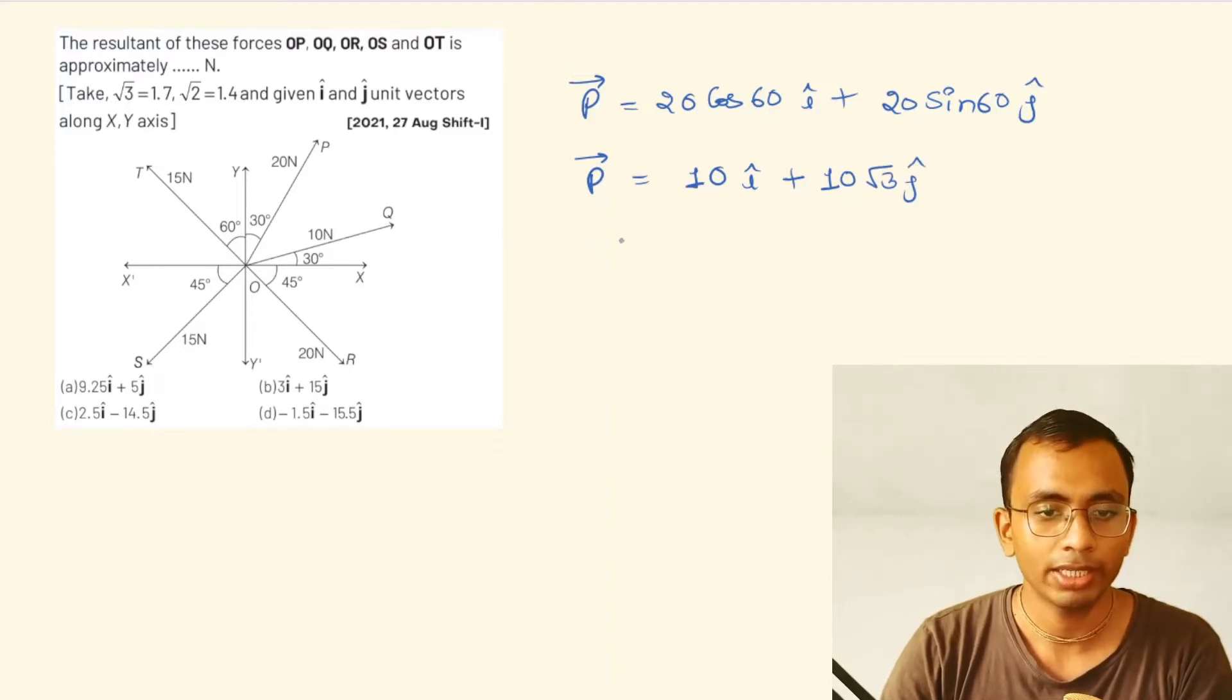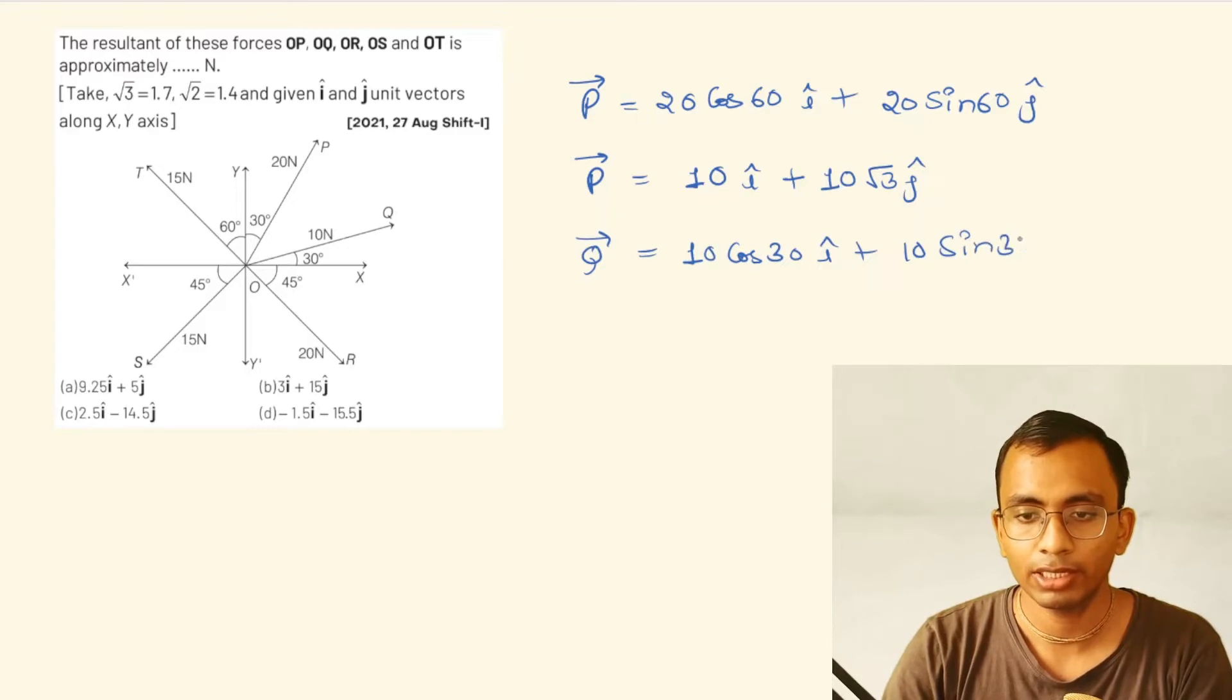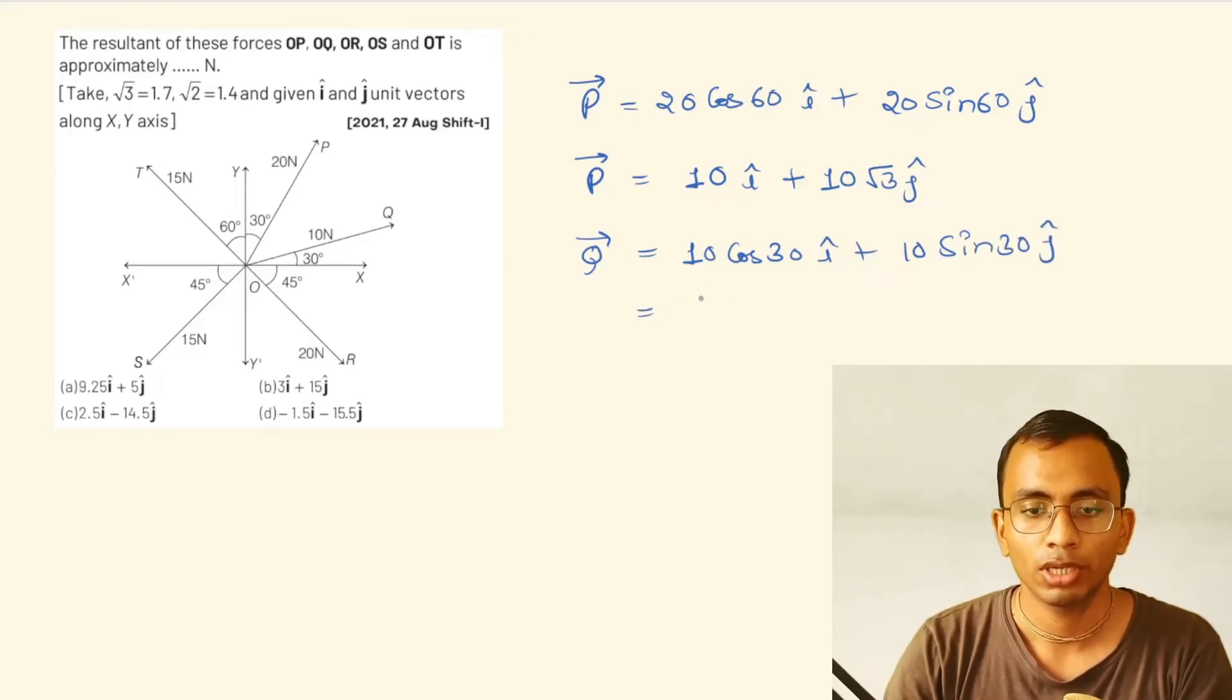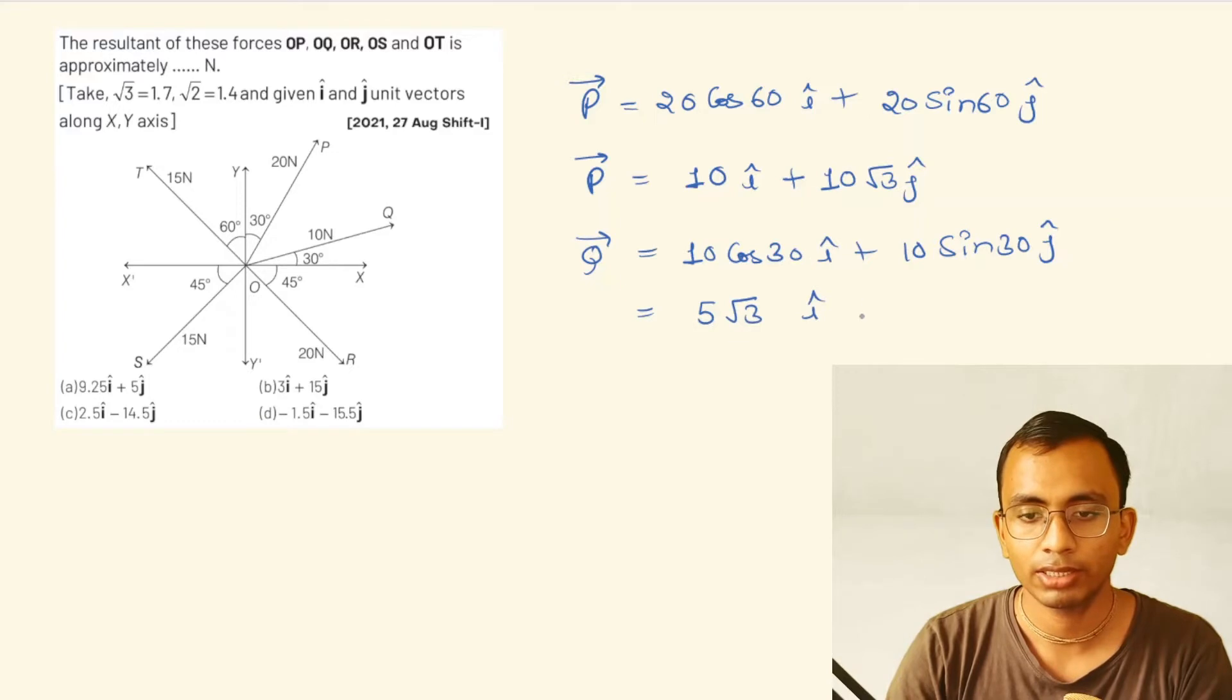Now writing Q. Vector Q is making an angle of 30 degrees and its magnitude is 10. So 10 cos 30° î + 10 sin 30° ĵ. This gives us 5√3 î + 5 ĵ.